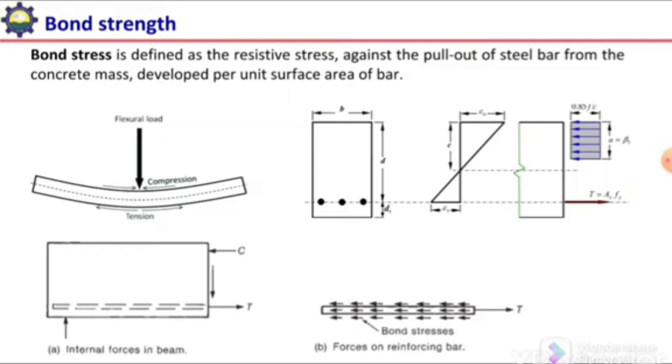Bond strength is defined as the resistive stress against the pull-out of a steel bar from the concrete mass, developed per unit surface area of the bar.